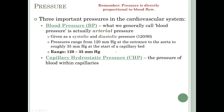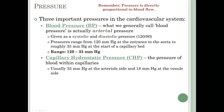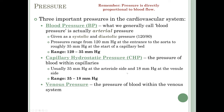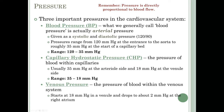Capillary hydrostatic pressure (CHP) is the pressure of blood inside the capillaries — usually 35 mmHg at the arterial side and 18 mmHg at the venule side. Venous pressure is the pressure within all veins and venules — starting at 18 mmHg in a venule just after leaving the capillary, dropping to about 2 mmHg at the right atrium. These gradients keep blood moving: fluids flow naturally from high to low pressure, so this steady drop from arteries through capillaries to veins keeps blood flowing in one direction.